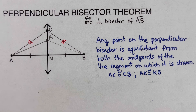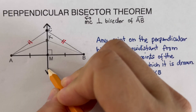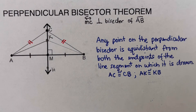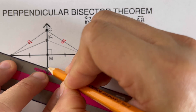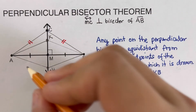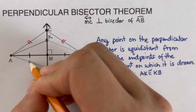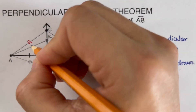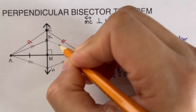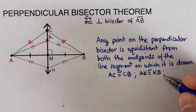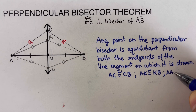That also works in the other direction. If we put another dot and name it H, then connecting A and H together gives AH congruent to HB. We'll put four tick marks on those segments and three tick marks on the others to show congruence. So AH is congruent to HB.